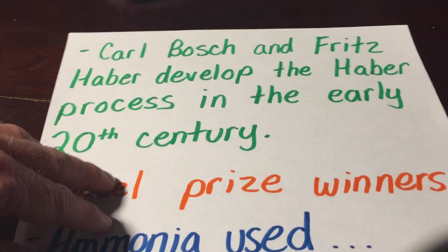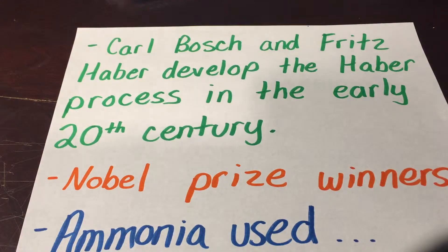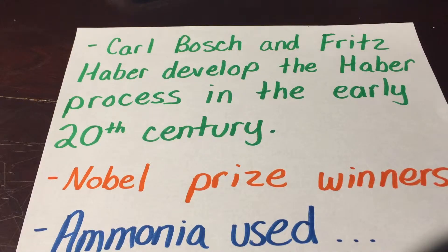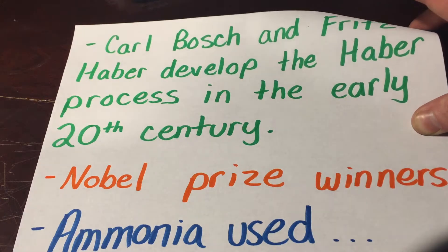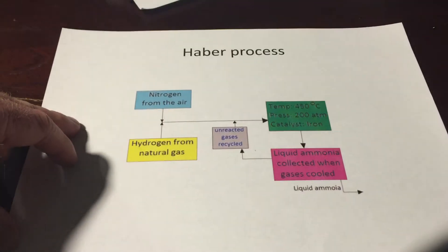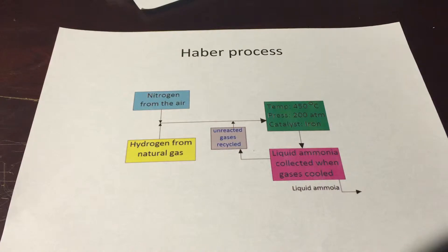Carl Bosch and Fritz Haber developed the Haber process in the early 20th century. It replaced the Birkeland-Eyde process, was much more energy efficient, and utilized molecular nitrogen and methane gas to produce ammonia. They went on to be Nobel Prize winners for their findings.